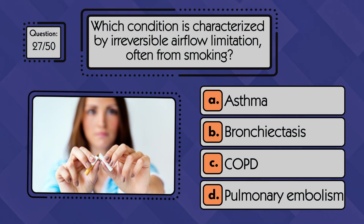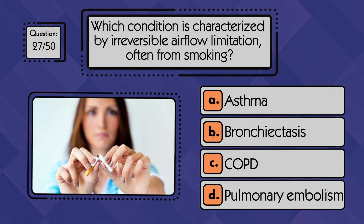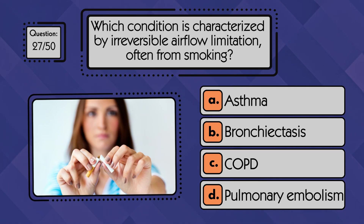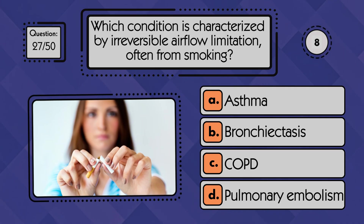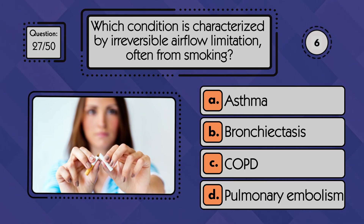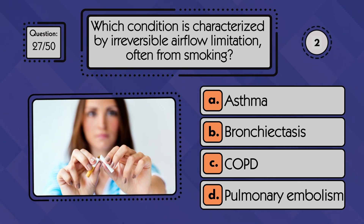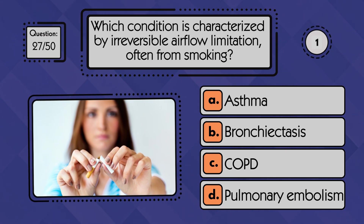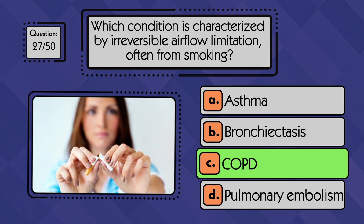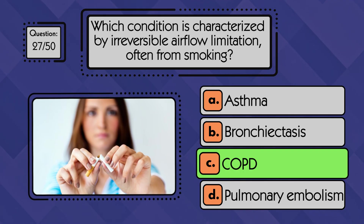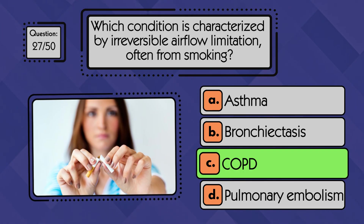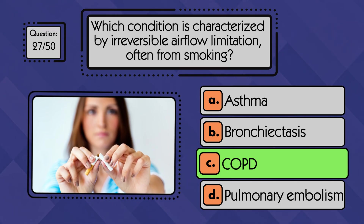Which condition is characterized by irreversible air flow limitation, often from smoking? COPD, or chronic obstructive pulmonary disease, is characterized by irreversible air flow limitation, often caused by smoking.